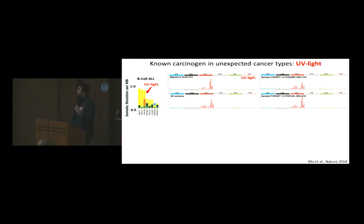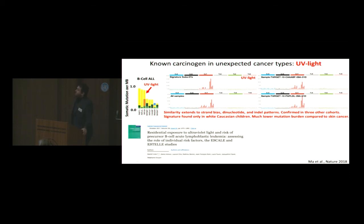Everything we knew about UV light, strand bias, dinucleotide indels, was present in their samples. We were very puzzled at that time. How can that be, how can that happen? As this paper was being reviewed, actually an epidemiological study came out from a French group saying that the only known risk factor for B cell ALL, they looked at a number of cancer types, is exposure to ultraviolet light. So we also got our epidemiological confirmation.